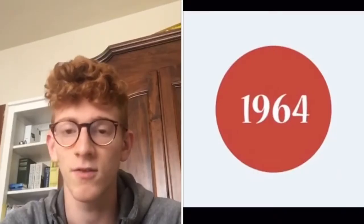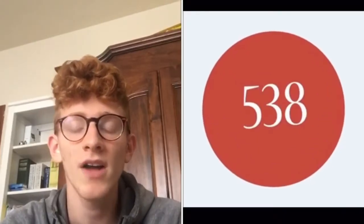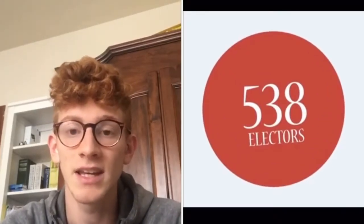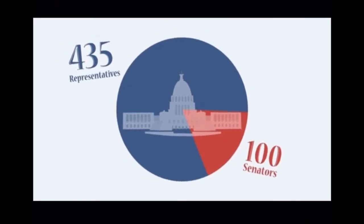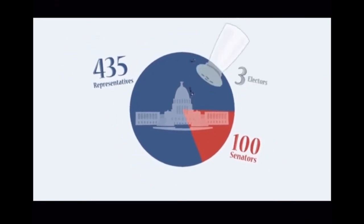Since 1964 there have been 538 electors in each presidential election: 435 representatives, 100 senators, and 3 electors from the District of Columbia. In each state, the number of electors and electoral votes is established and based on the population size of that state.